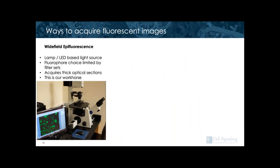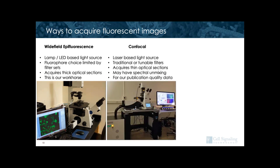What type of instruments can you use to acquire fluorescent images? The most frequently used instrument in the immunofluorescence group is the wide-field epifluorescent microscope. This system uses a lamp or LED-based light source, and fluorophore choice is limited by the filter sets installed. This type of imaging will give you thick optical sections, which may increase background and give a less crisp image. We also have a confocal microscope, which we reserve mostly for publication quality images. This system uses a laser-based light source, acquires thin optical sections, and is better for acquiring z-stacks. Confocals may have traditional or tunable filter sets and spectral unmixing capabilities.